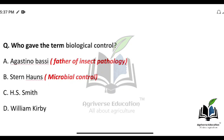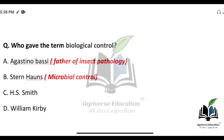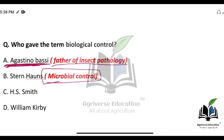Who gave the term 'biological control'? The right answer is option C — H.S. Smith. William Kirby is called the Father of Entomology. The Father of Insect Physiology and the Father of Insect Pathology is Agostino Bassi. The term 'microbial control' was given by Steinhaus.